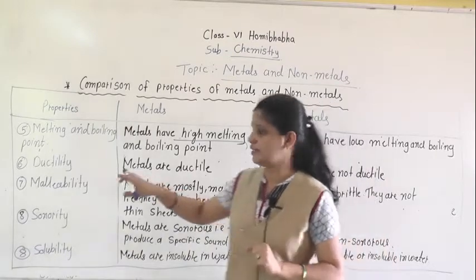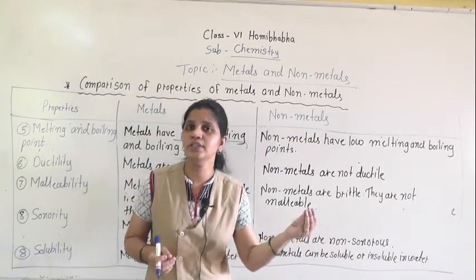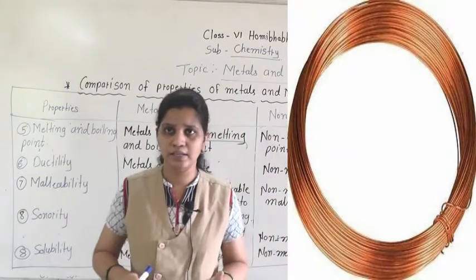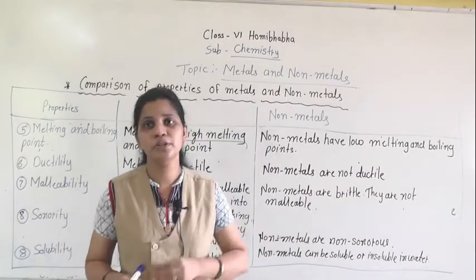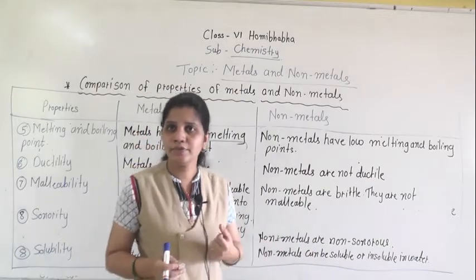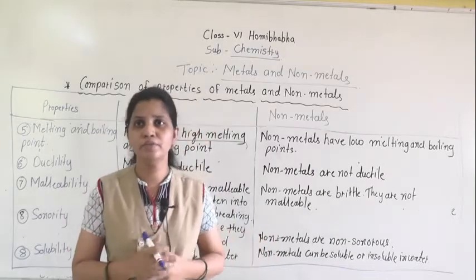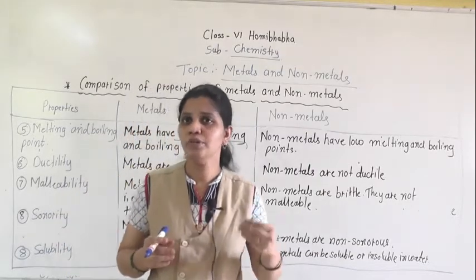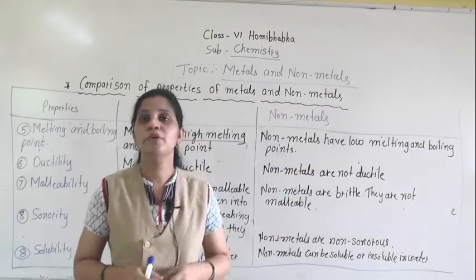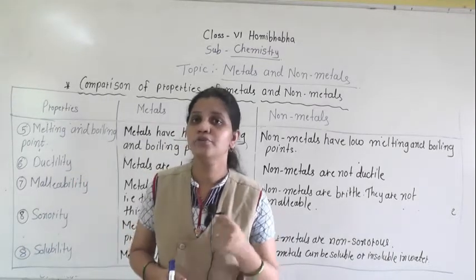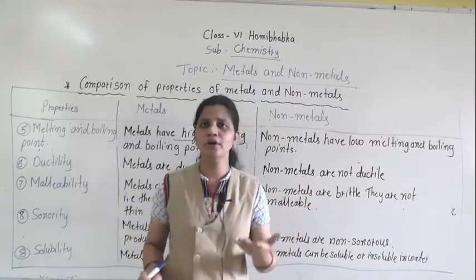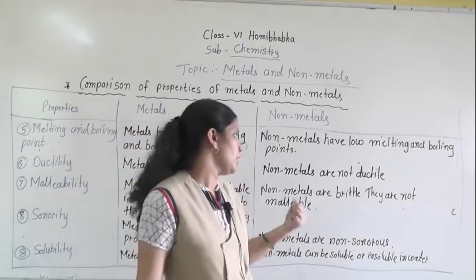The sixth property is ductility. Ductility means which can be drawn into a thin wire. Metals are ductile — they can be drawn into a thin wire. That is why in electrical gadgets we use copper wire. Wood cannot be drawn into a thin wire because it does not show ductile property. Mostly all metals are ductile. Non-metals are non-ductile — they do not show this property.